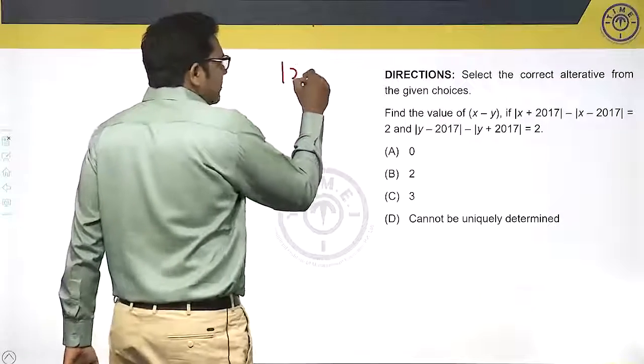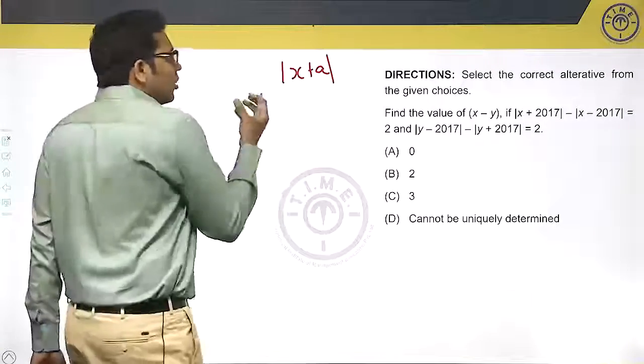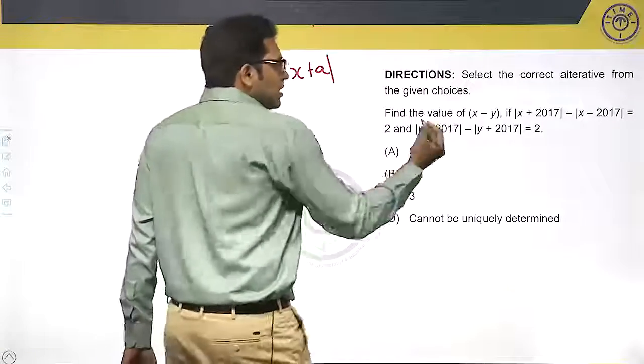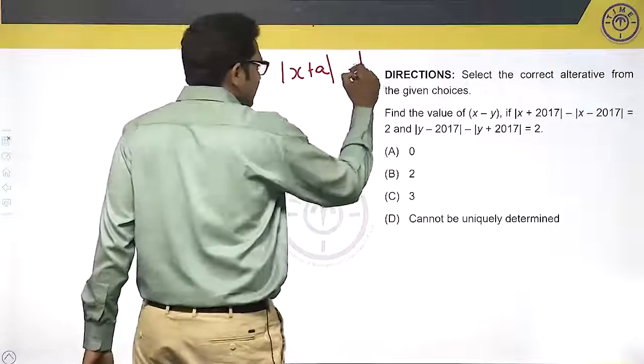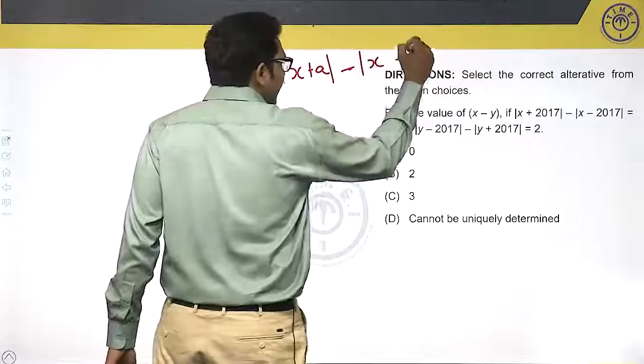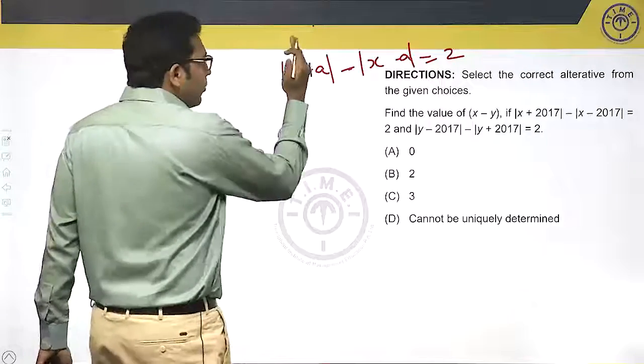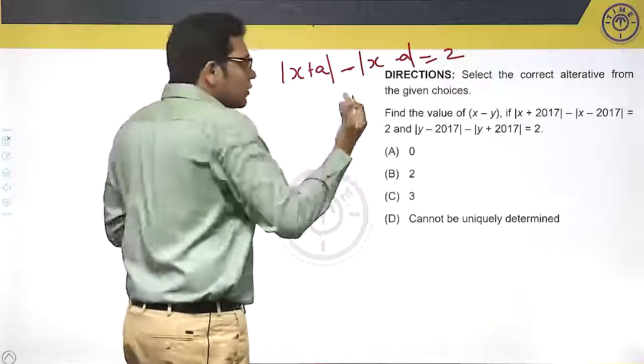What is the meaning of mod? Mod is nothing but the distance, it's always positive, so it's a units from x. So |x + 2017| - |x - 2017|, or |x + a| - |x - a|. This difference should be 2. From a point x, a units to the left and a units to the right, the difference should be 2.